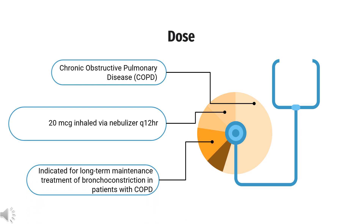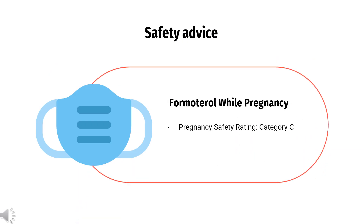Dose: For chronic obstructive pulmonary disease (COPD), indicated for long-term maintenance treatment of bronchoconstriction, the dose is Perforomist 20 mcg inhaled via nebulizer every 12 hours. Safety advice: Formoterol is FDA Pregnancy Category C — risk cannot be ruled out.